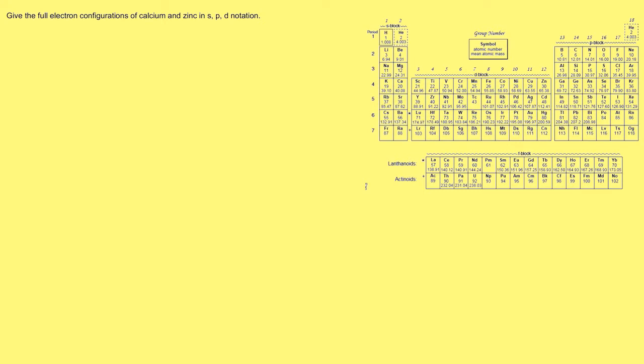Let's try some questions. We've got a periodic table here to help us. The first question is: give the full electron configurations of calcium and zinc in normal spdf notation. So here's calcium. We're going to fill in 1s2, then 2s2, then 2p6, then 3s2, then 3p6, then 4s2.